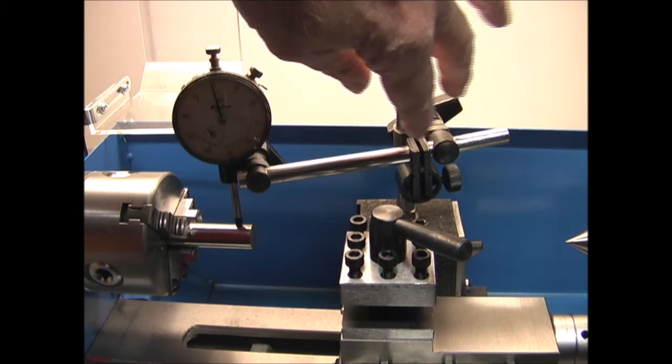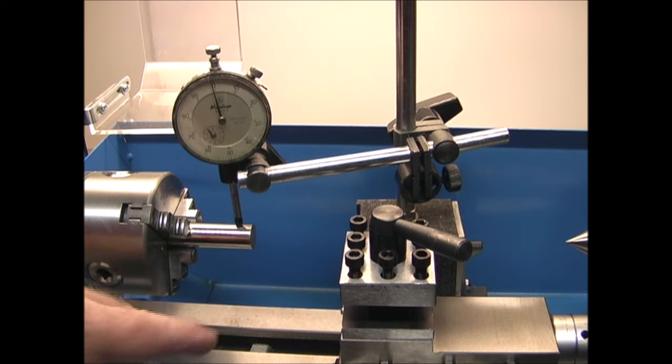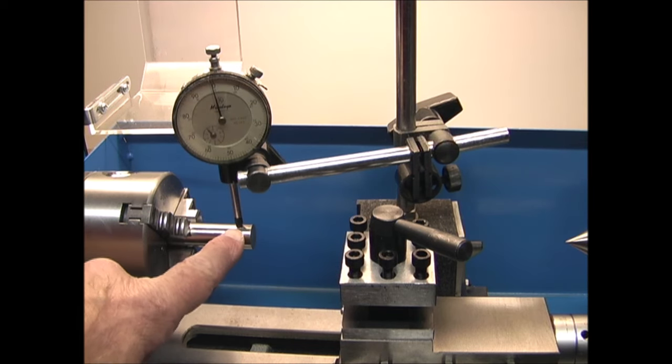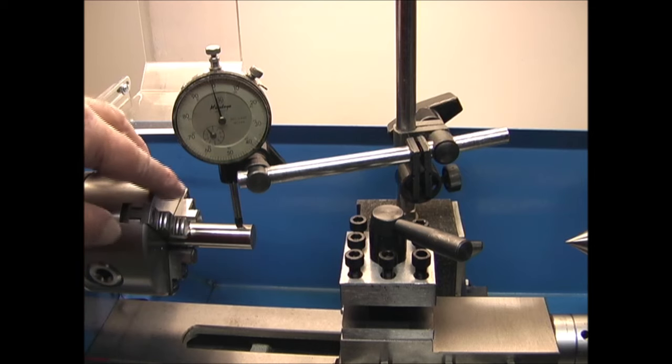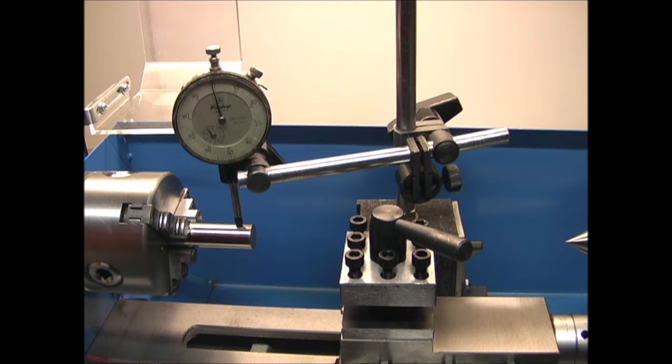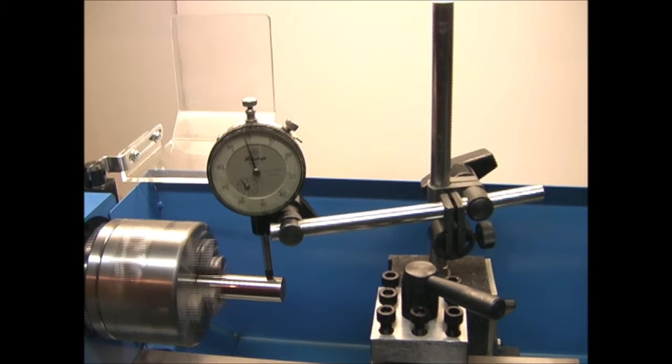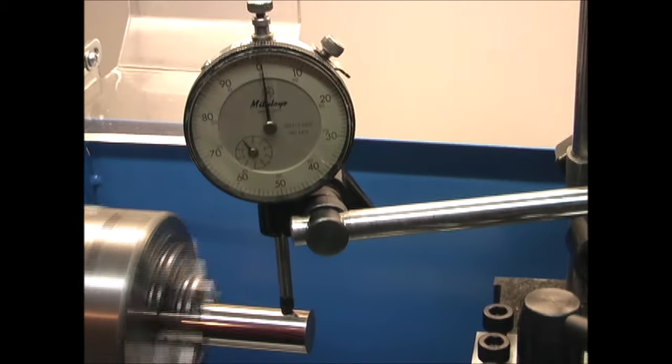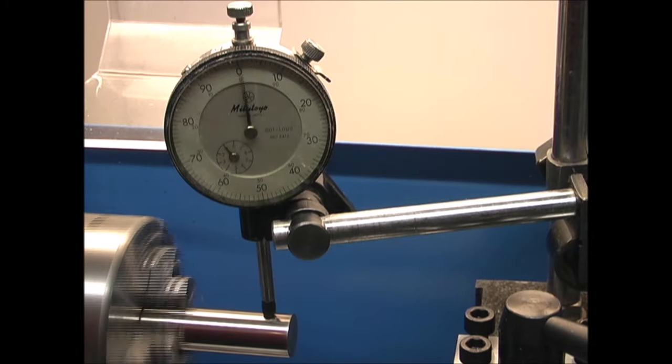Now I put my magnetic base on the lathe with a dial indicator and I've got a ground shaft in the chuck. I just want to see what kind of runout there is. It's not going to be perfect because it's a three jaw chuck but see how close it is. You can see it's a couple of thousandths out, I don't think that's too bad.